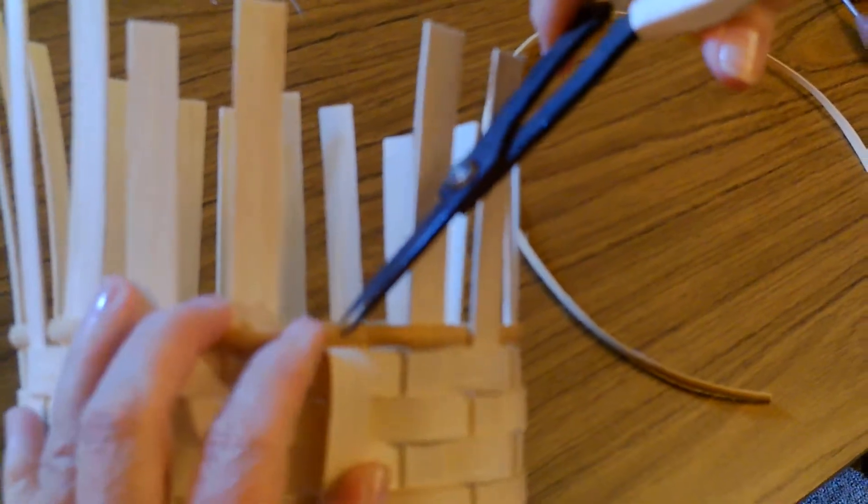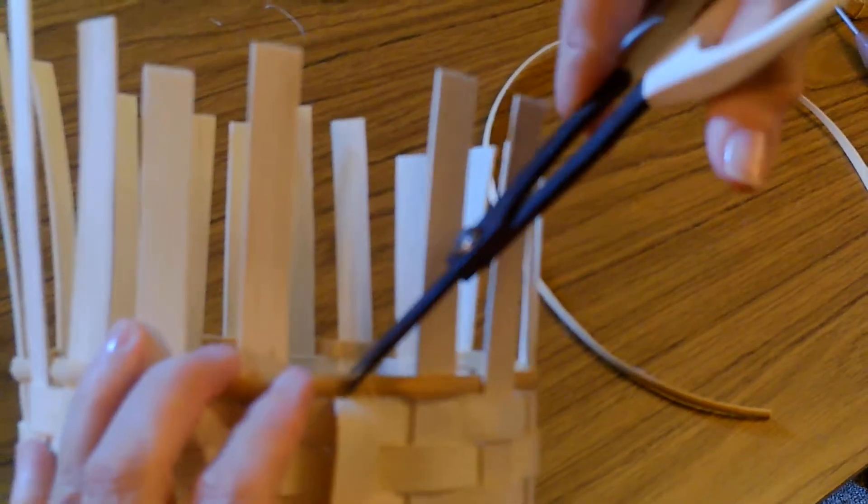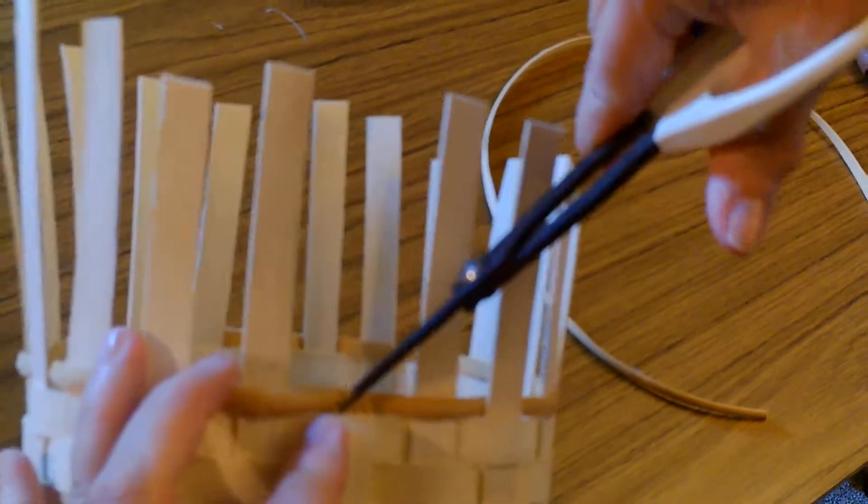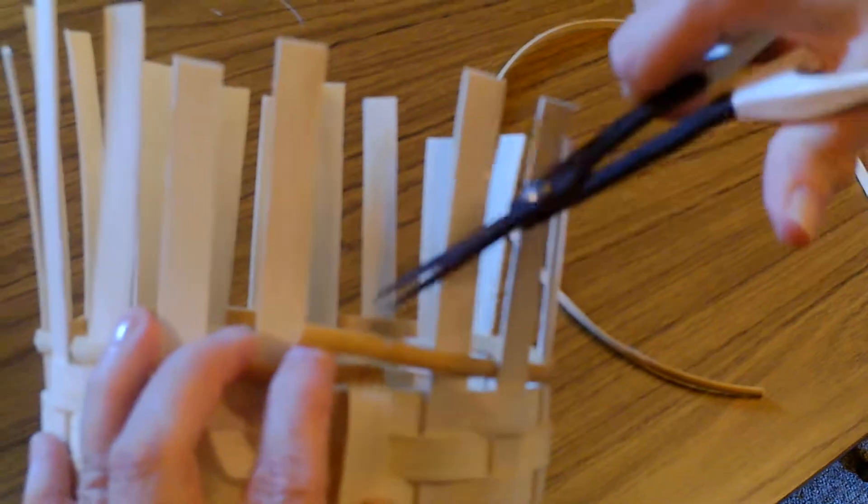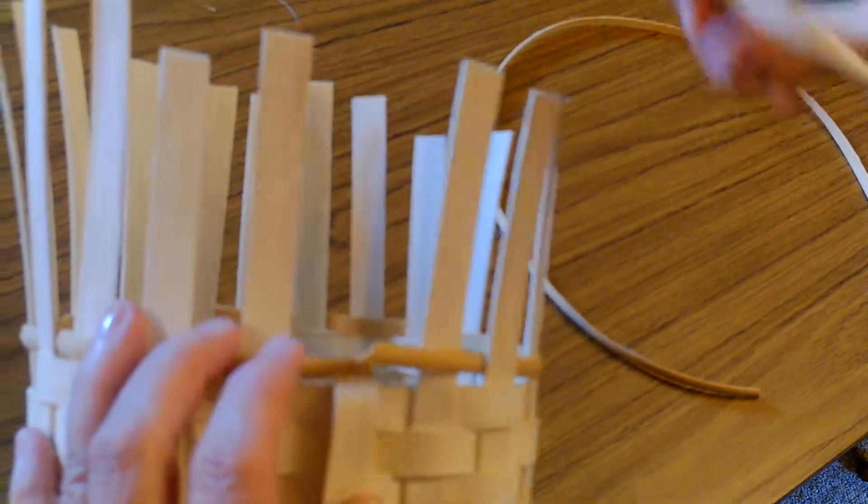You just kind of go in at an angle and snip through both of them. It comes in handy to have these really sharp shears.